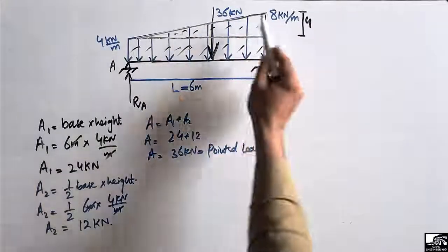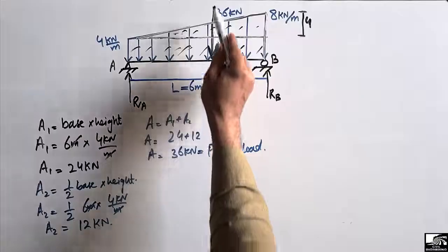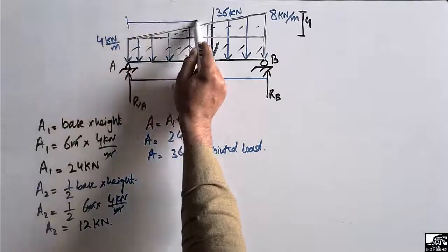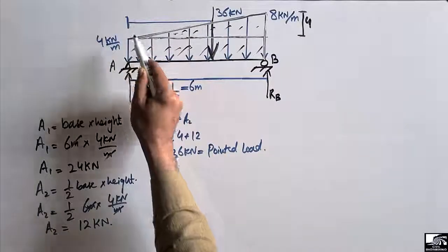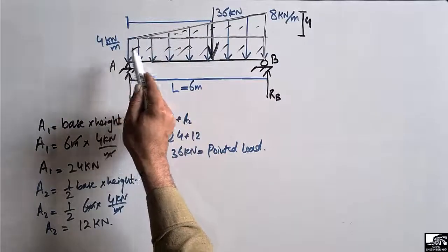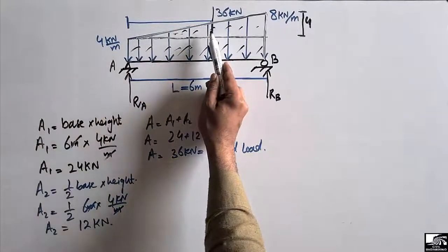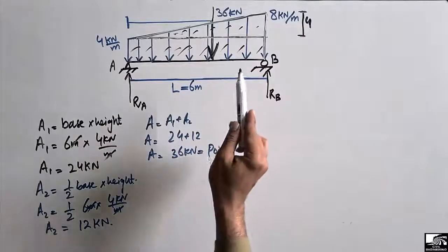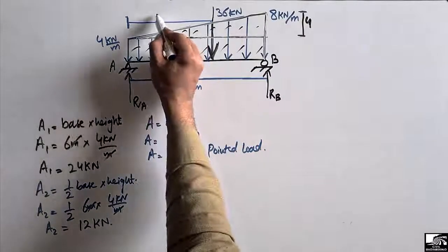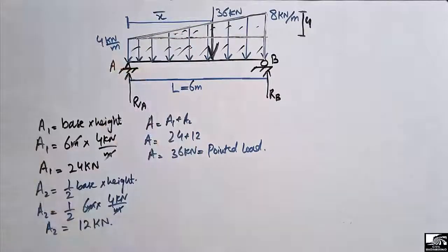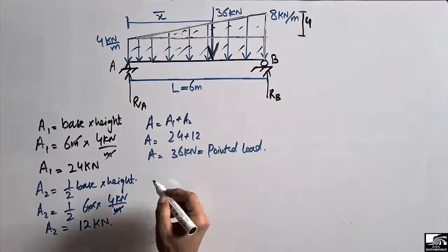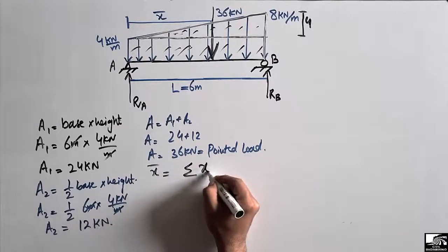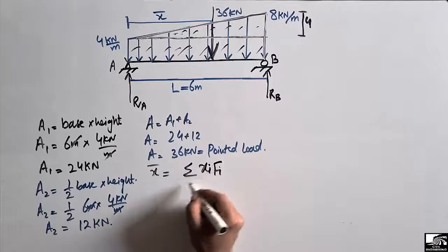Now we convert the uniformly varying load to a concentrated load, which acts at a centroidal distance from support A. We need this distance to find the moment caused by this force. The next step is to find x-bar using the centroid formula: x-bar = Σ(xi × fi) / Σfi.